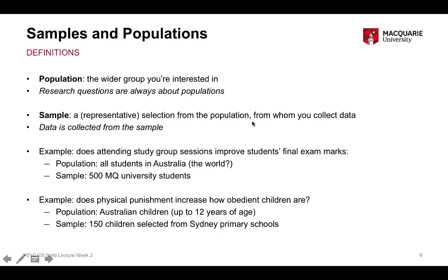To give a second example, let's say we were interested in whether physical punishment makes children more obedient — whether children whose parents are physically punishing or reprimanding them become more obedient. Our population might be all Australian children, defined as those up to 12 years of age. But our sample might be 150 children selected from Sydney primary schools. The sample are the children we're collecting data from, whereas the population is the broader group we generalise our findings to.